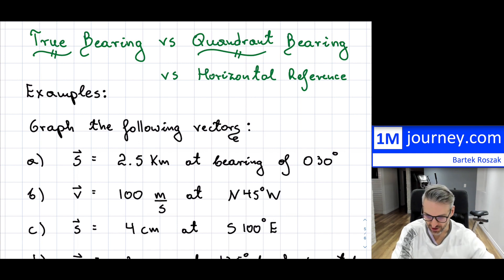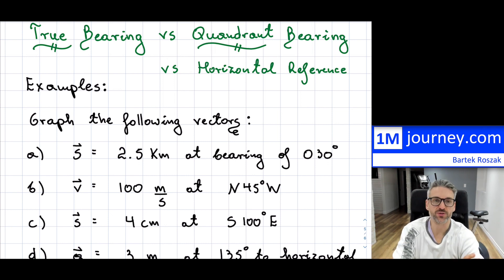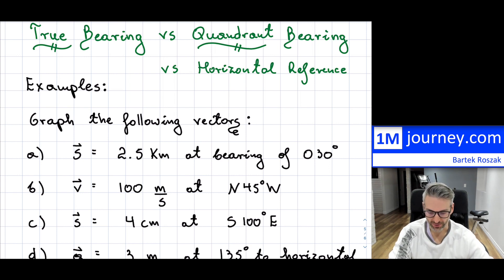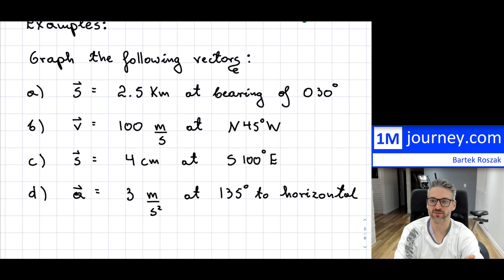These particular examples make the assumption that you know the difference between true bearing, quadrant bearing, and horizontal reference — although you probably can deduce it from the examples, and you can watch that link I pointed out before going into these. So there are four examples here: a vector which is basically displacement, a velocity vector, and an acceleration vector.